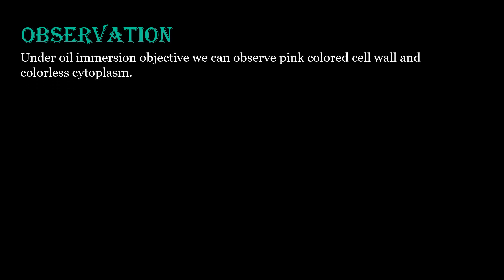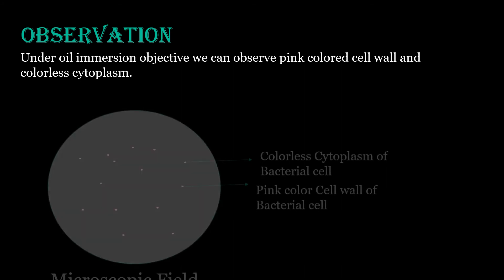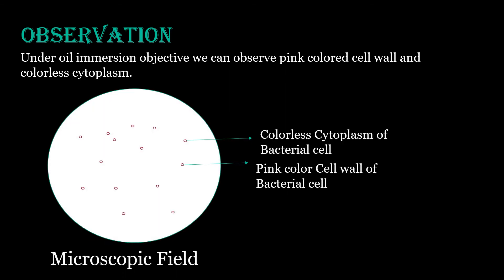Under oil immersion objective, we can observe a pink colored cell wall and colorless cytoplasm. With the help of a diagrammatic representation, you can see what kind of observation you will get after staining the cell wall: in the microscopic field, you will observe colorless cytoplasm of the bacterial cell and a pink colored cell wall.